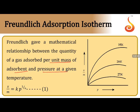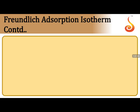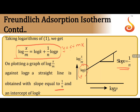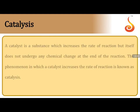Freundlich adsorption isotherm: the mathematical relationship is x/m = k·P^(1/n), where x/m is the quantity of gas adsorbed per unit mass of adsorbent and P is the pressure at a given temperature. Adsorption increases as temperature decreases. Taking logarithm: log(x/m) = log k + (1/n)log P, which is of the form y = mx + c, where slope = 1/n and intercept = log k. This is important for numerical questions.